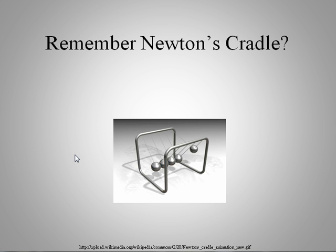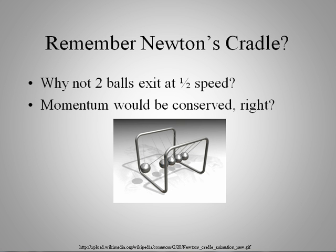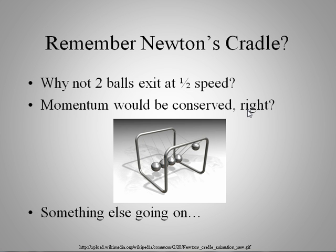Remember Newton's Cradle. We talked about conservation of momentum - one ball coming in and one ball coming out with the same velocity. But if two balls exited with half the speed, what would happen? We would have two mass times the speed of one-half. That would be two times one-half, equals one. Momentum would be conserved. But that's not what we see. So something else must be going on.